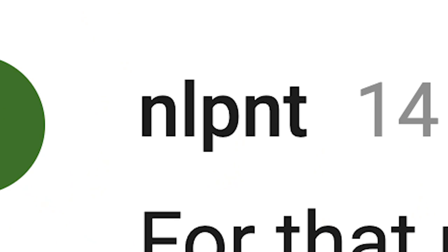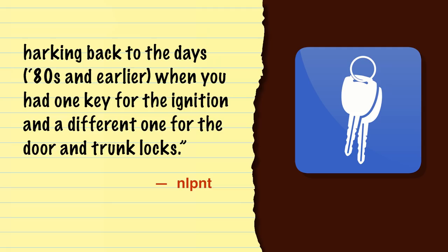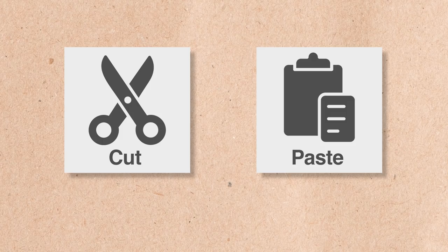My friend Nilpunt has a great example of how anachronistic symbols often feed off anachronistic language. If you look for an icon of car keys — and just the fact that they're so commonly referred to in the plural — you'll often get two simple stamped metal keys on a ring, hearkening back to the days when you had one key for the ignition and a different one for the door and trunk locks. This brought to mind the way we talk about moving visual data on a computer: cut and pasting, with a scissors icon representing the cutting and an anachronistic wooden clipboard representing the pasting, though I'm old enough to remember when an old-fashioned paste jar was sometimes used for the latter.